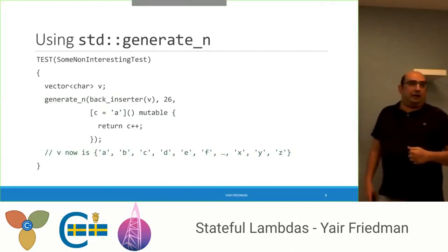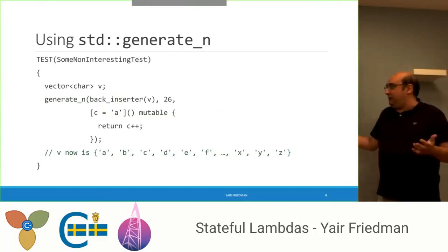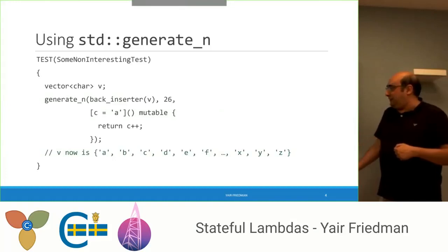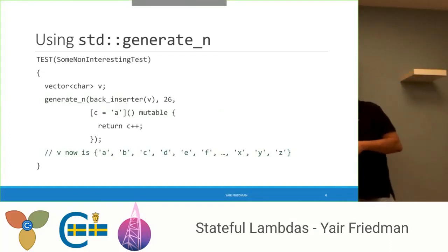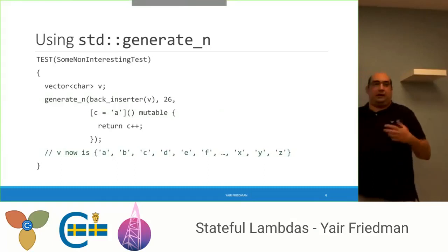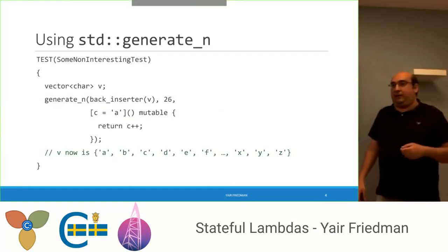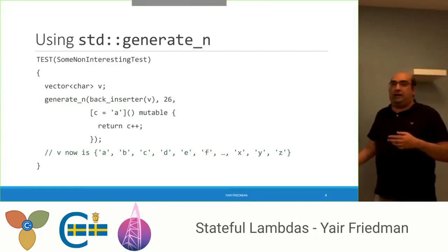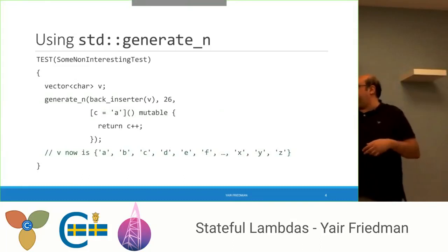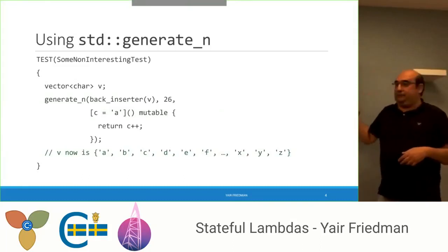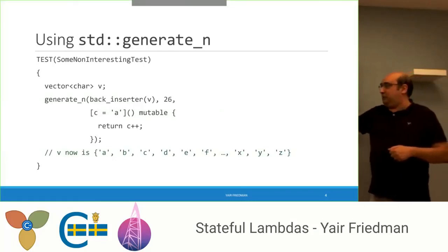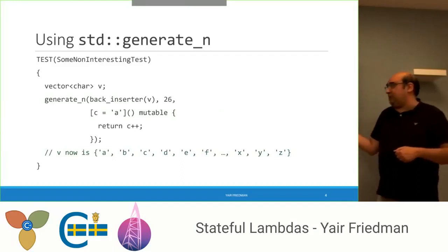Now we have our example again where we fill up our vector with letters, and we can use the generate algorithm. There are a few algorithms in the generate family. I'm using generate_n to create the members of our vector. You just need to put the back inserter and the vector keeps filling up as much as needed, with each element being generated from the lambda.